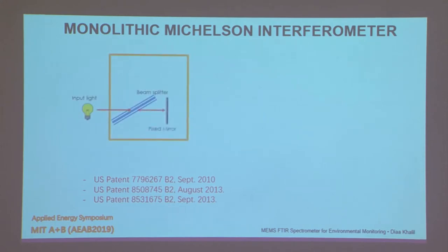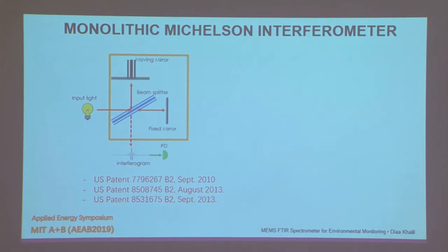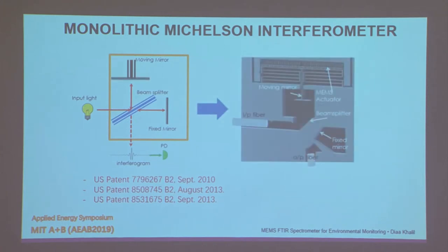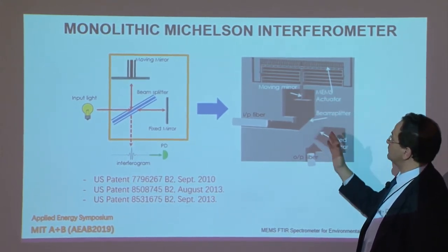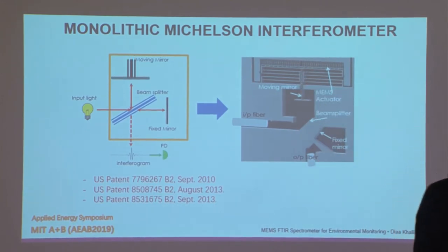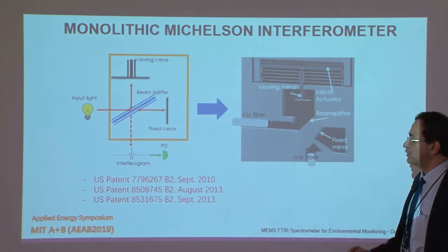The idea is quite simple: an FTIR spectrometer is simply a beam splitter with two mirrors — one moving mirror and one fixed mirror. Mixing the two signals back from the fixed and moving mirrors, you get an autocorrelation function. When you do the Fourier transform of this autocorrelation function, you get the spectrum. You can build this on a MEMS substrate simply by having the silicon interface itself act as the beam splitter, with a moving mirror connected to a comb-drive actuator, which is now classical in MEMS.